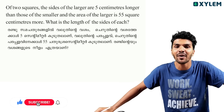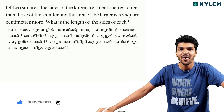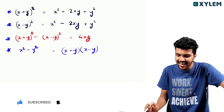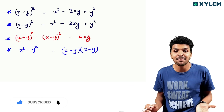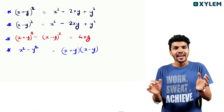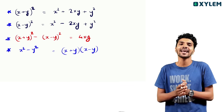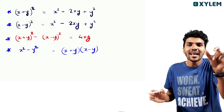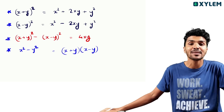You have studied one chapter in my class — Identities. You have studied x plus y whole square, x minus y whole square, and x plus y into x minus y is equal to x square minus y square.